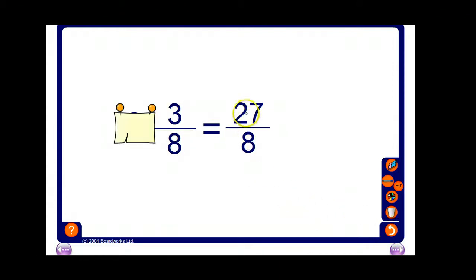Ooh, 27 over 8. Our 8s go, how do our 8s go? 8, 16, 24, 32. Well, we don't need that one. So it's 3 wholes and then 3 left over. Okay, good, I think we're cracking this.